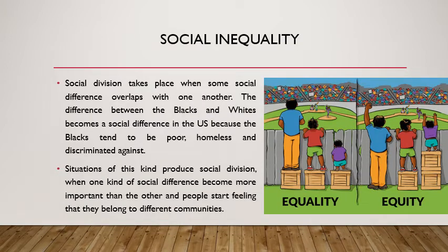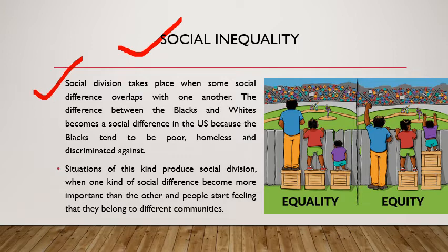Social division takes place when some social differences overlap with one another. The difference between Blacks and Whites becomes a social division in the US because Black people tend to be poor, homeless, and discriminated against, drawing a clear line between the two communities. When one kind of social difference becomes more important than others and people start feeling they belong to different communities, it becomes very difficult to reconcile.